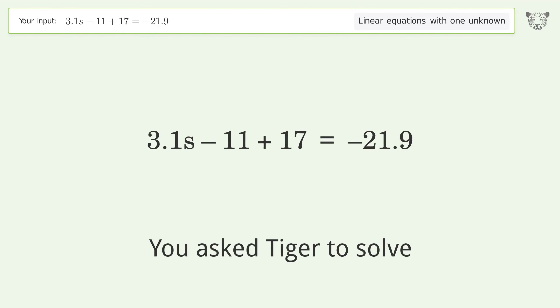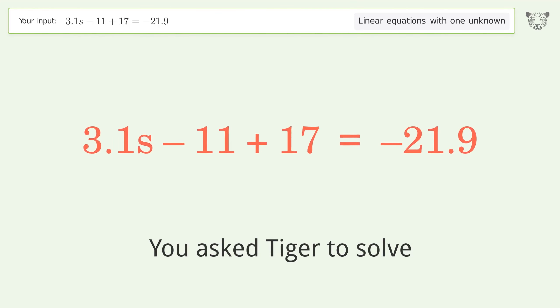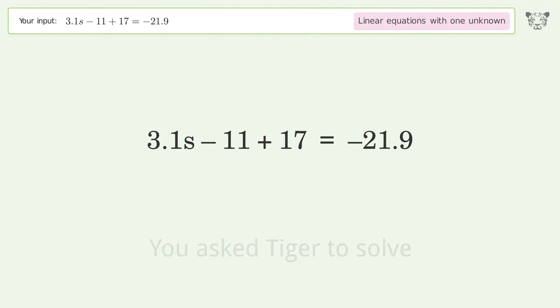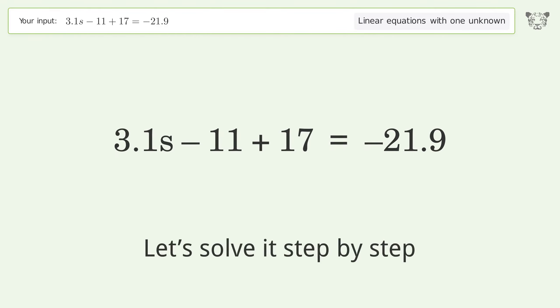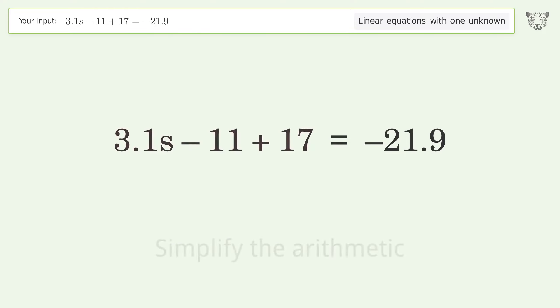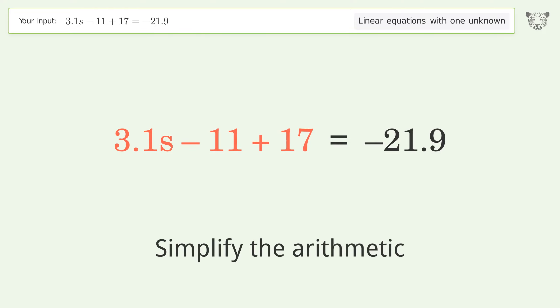You ask Tiger to solve this — it deals with linear equations with one unknown. The final result is s equals negative 9. Let's solve it step by step: simplify the expression, simplify the arithmetic.